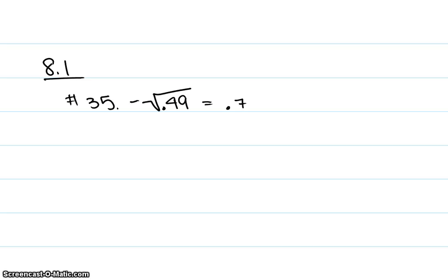To solve this problem, you just have to think about what the square root of 49 is without the decimal point, and that is 0.7. The negative sign just tags along till the very end. So the total answer would be negative 0.7 — the negative square root of 0.49 is negative 0.7.